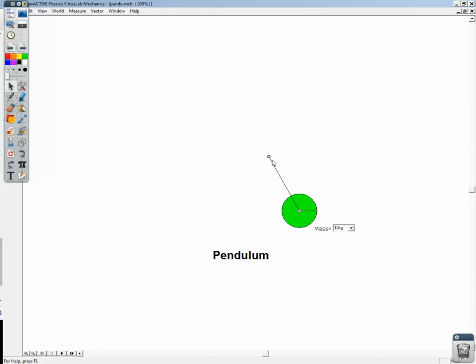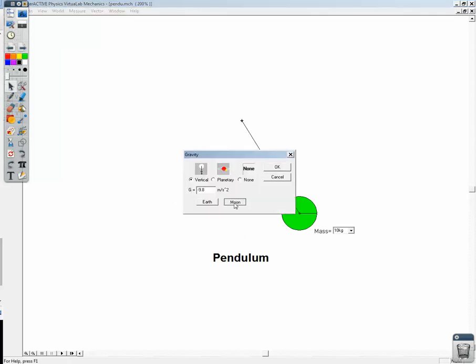Let's try changing gravity. And we can do that on this program. We go up here to world, and we're going to go, well, first let's look at the period. I changed the length of the string again, so let's look at the period here. We've got a period of about 2.5 seconds. So stop that, go to world, gravity.